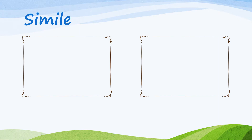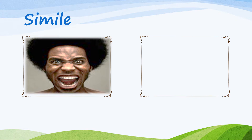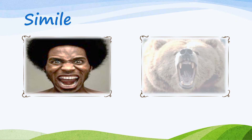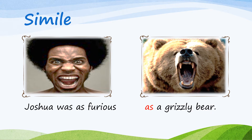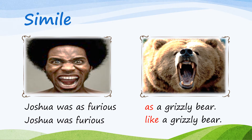Let's continue. Take a close look at the character who I call Joshua. What emotion would you say he is experiencing? His emotion is so intense that you, as a writer, have decided to compare it to this animal — a grizzly bear. Now, try writing a sentence to compare the two characters using a simile. Pause the video until you are done writing your two sentences. Welcome back again. These are the sentences I came up with: Joshua was as furious as a grizzly bear. Or, maybe you wrote: Joshua was furious like a grizzly bear.